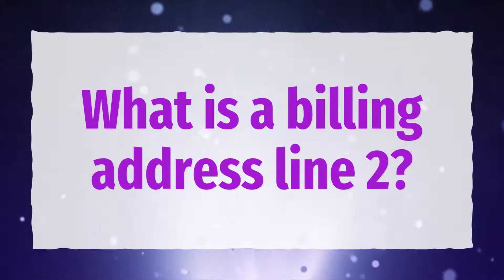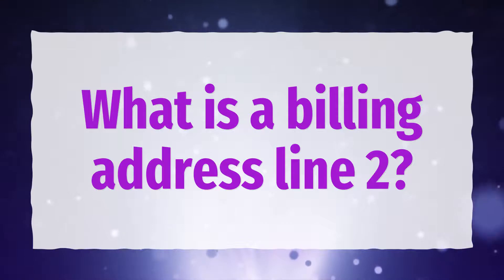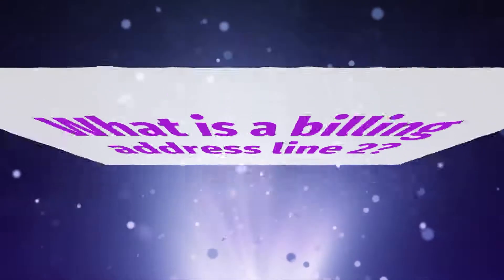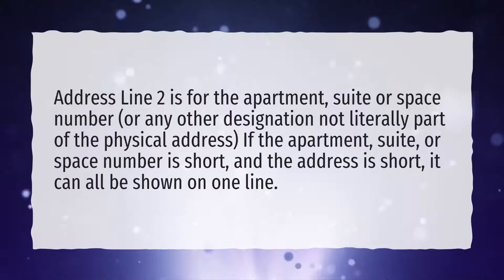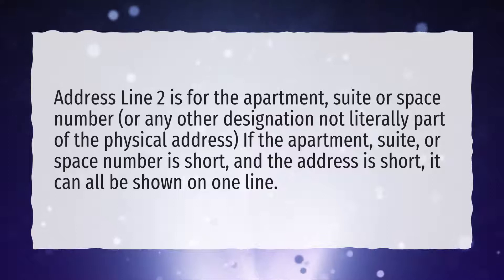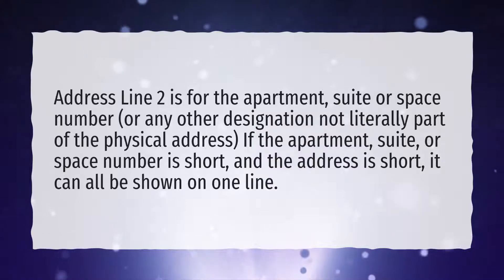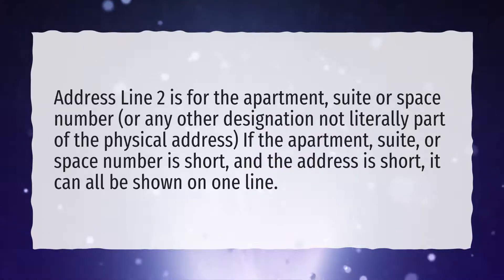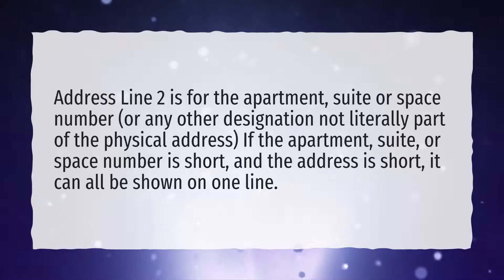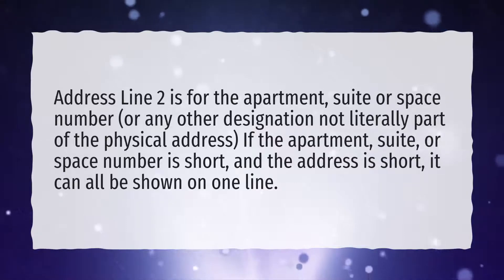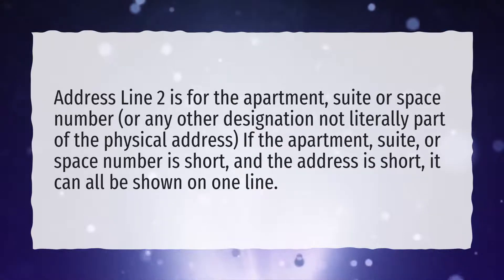What is a billing address line 2? Address line 2 is for the apartment, suite, or space number, or any other designation not literally part of the physical address. If the apartment, suite, or space number is short, and the address is short, it can all be shown on one line.